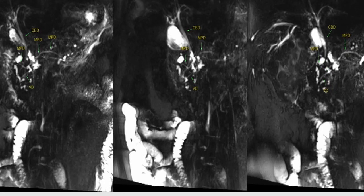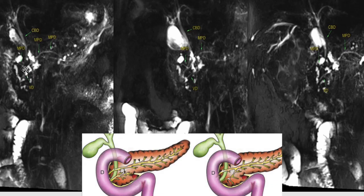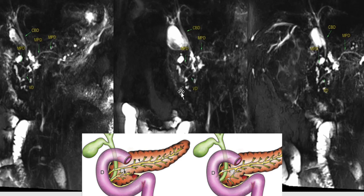These are thick slab MRCP images of a patient with acute chronic pancreatitis. The main pancreatic duct can be seen to cross the CBD and drain separately into the minor papilla. The common bile duct joins the ventral pancreatic duct and drains into the major papilla of the duodenum. The MPD is seen to cross the CBD and drain into the minor papilla, while the ventral duct joins the common bile duct and drains into the major papilla. These findings are consistent with pancreatic divisum.